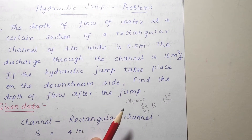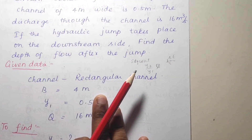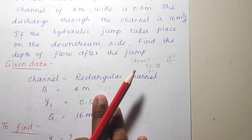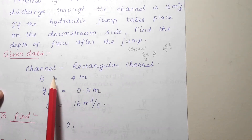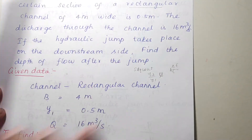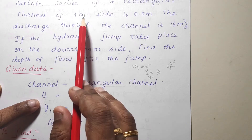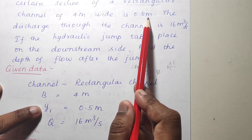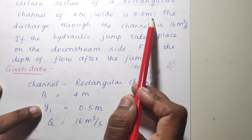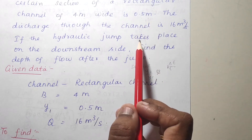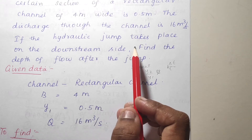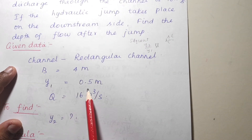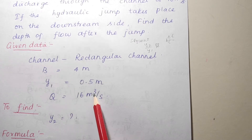Read the problem and write down the given data. The channel is a rectangular channel. The width is 4 meters and the depth is 0.5 meters. At a certain section the depth is 0.5 meters — they didn't specify whether the depth is before or after the jump. So y1 is equal to 0.5 meters, and the discharge is equal to 16 cubic meters per second.